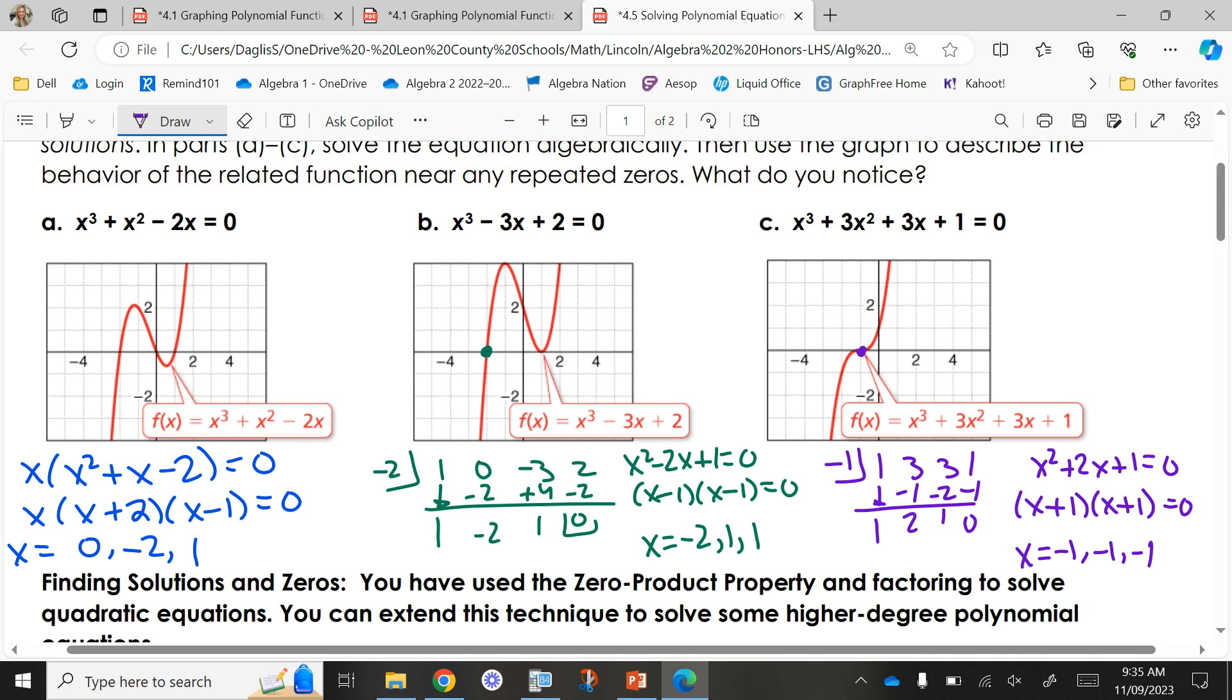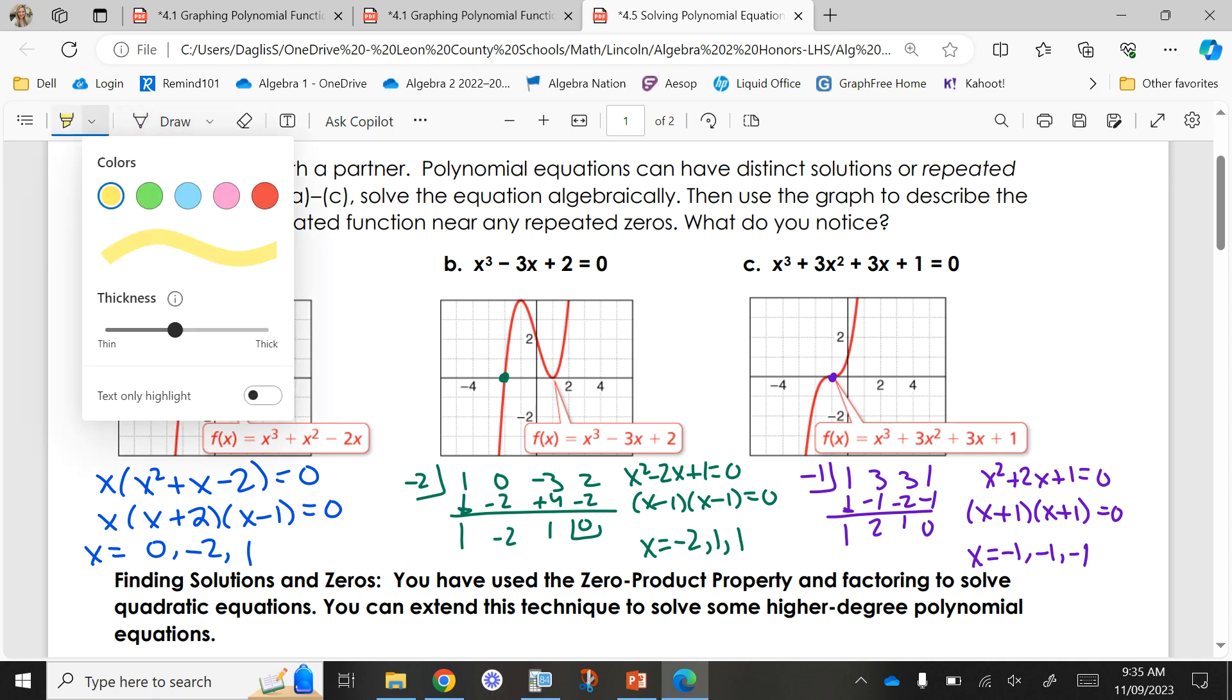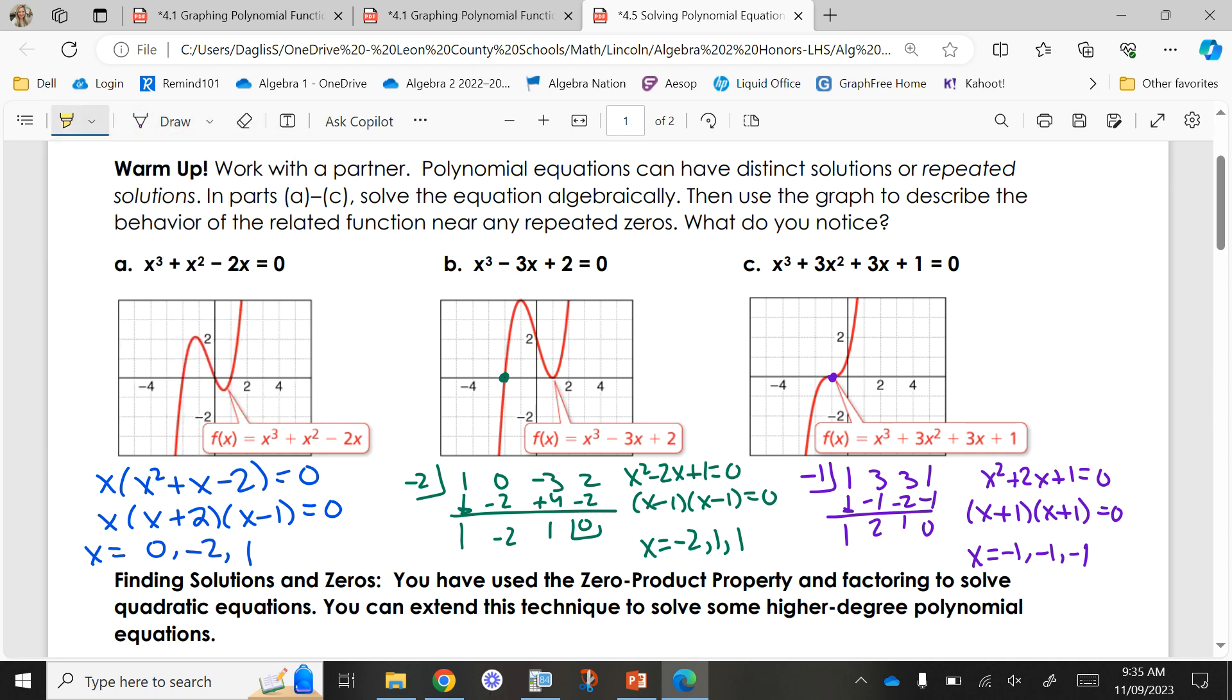Part A, you could factor by a GCF and then basic factoring. B and C, you had to use one of the x-intercepts from your graph, solve it, and move forward. So looking at what we have here, what do you notice about the solutions, the graph, and the function? Do we see any patterns happening?